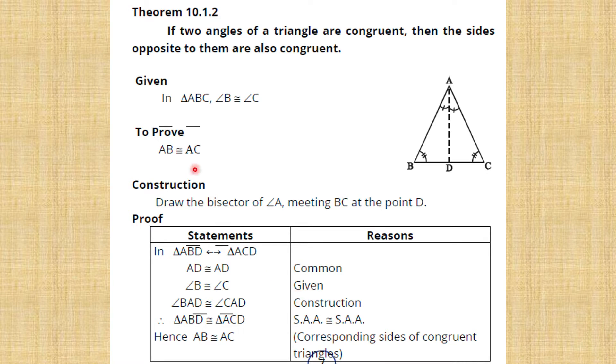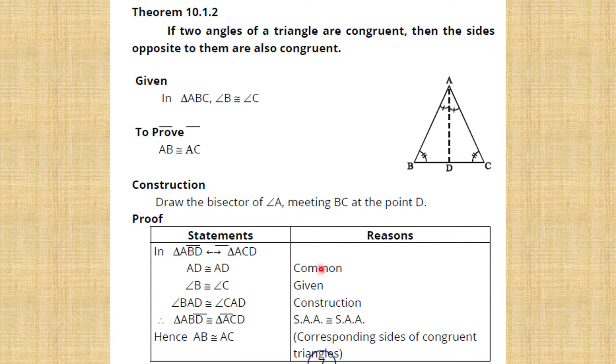The second statement: angle B is congruent to angle C. This is given. We have angle B congruent to angle C.